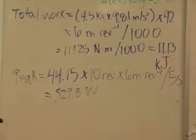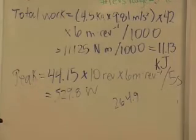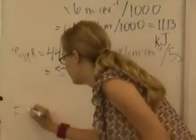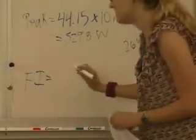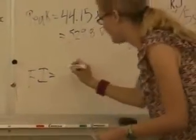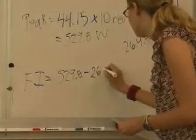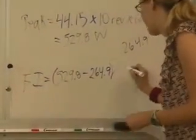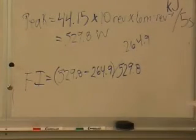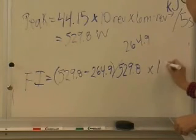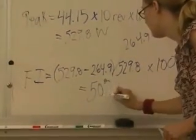And his lowest power ends up being 264.9. So to calculate the fatigue index, we're going to take the highest power minus the lowest power divided by the highest times 100. So 529.8 minus 264.9 divided by the highest, so 529.8, and then times 100. This is so that it's in percentage form and it ends up being 50%.